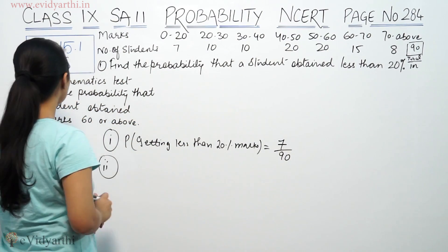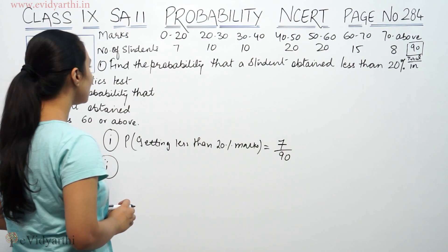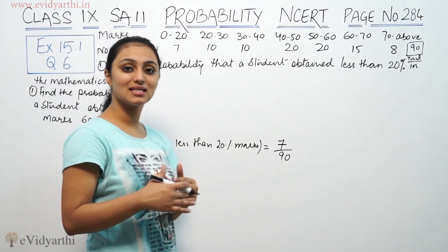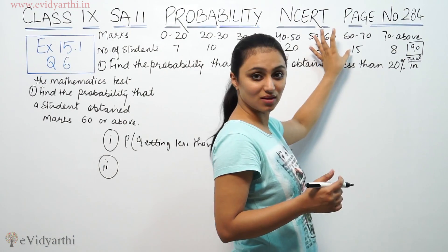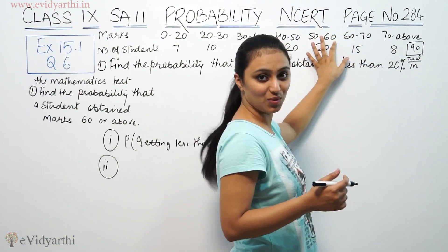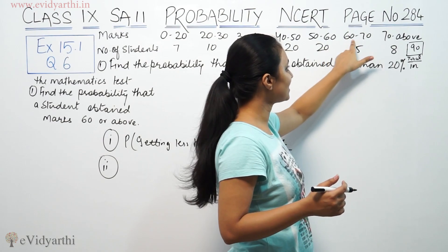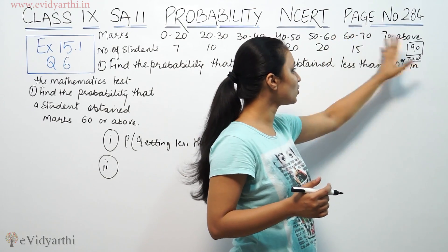Next is find the probability that a student obtained marks 60 or above. Student gets 60 and above marks. So 60 and above, this will be more than 60% marks.